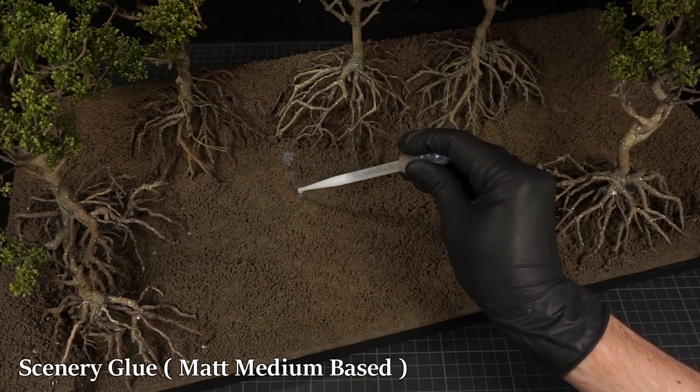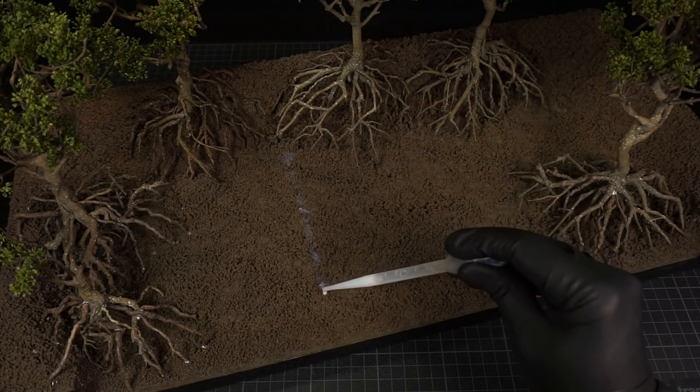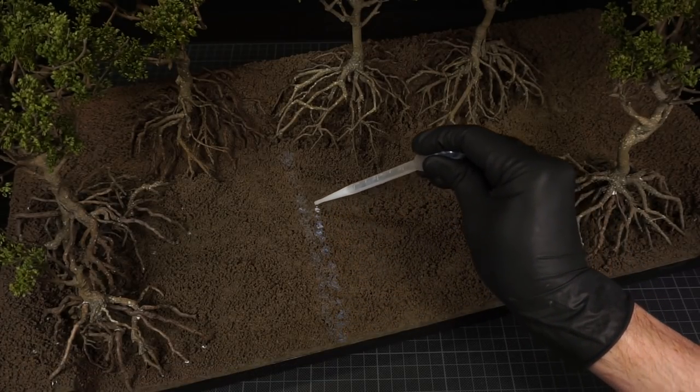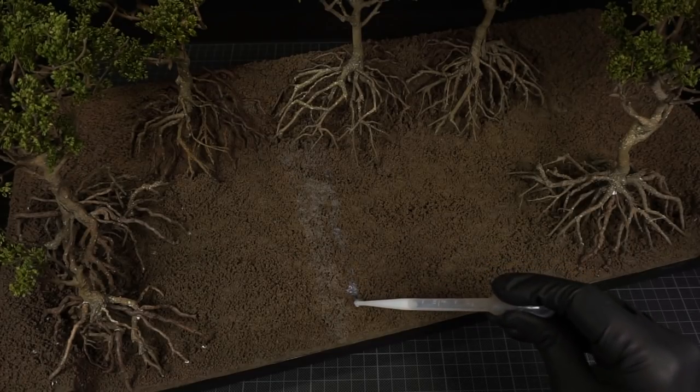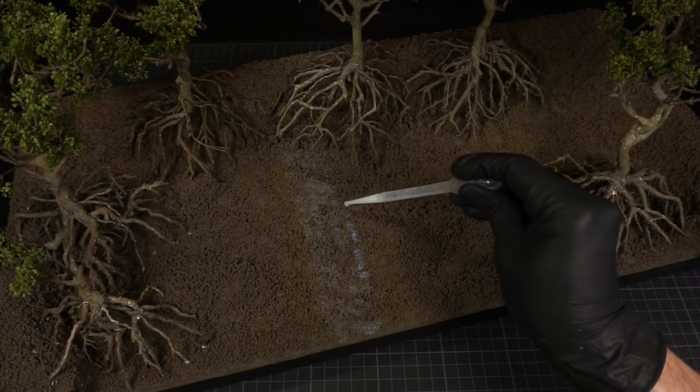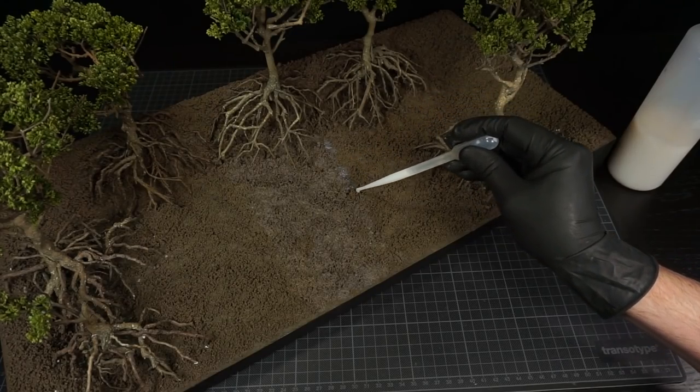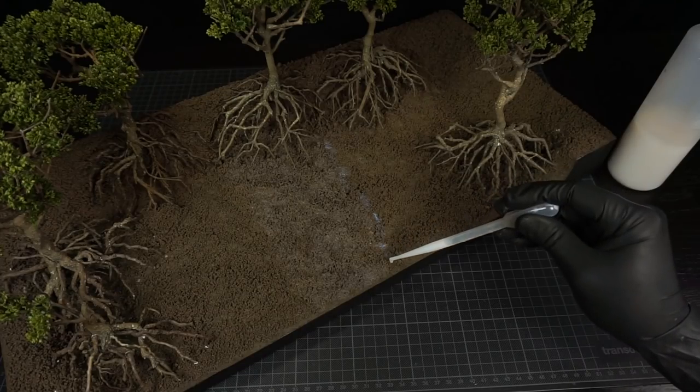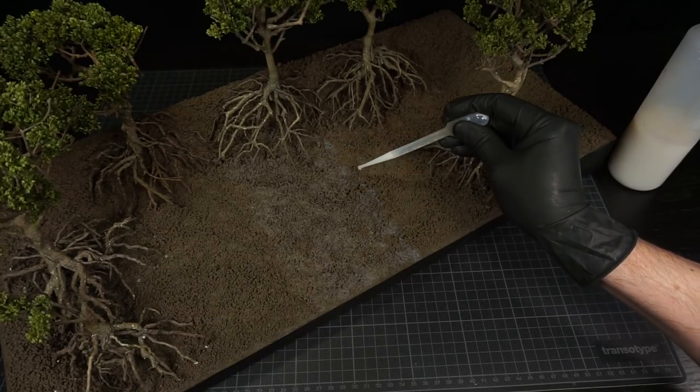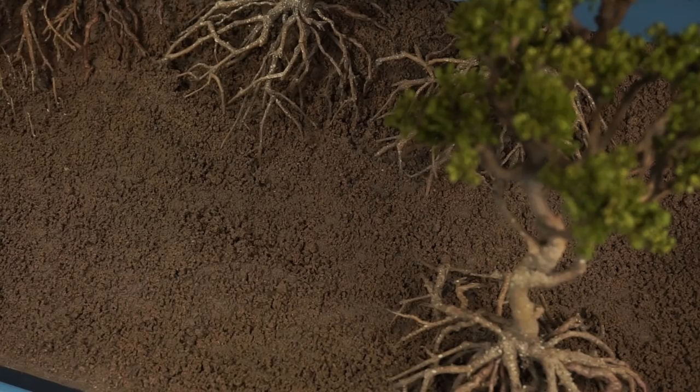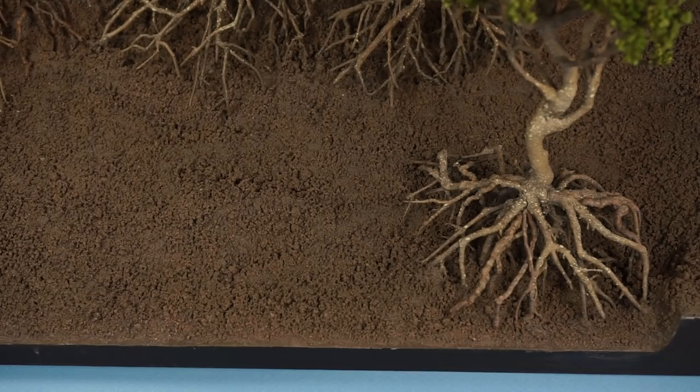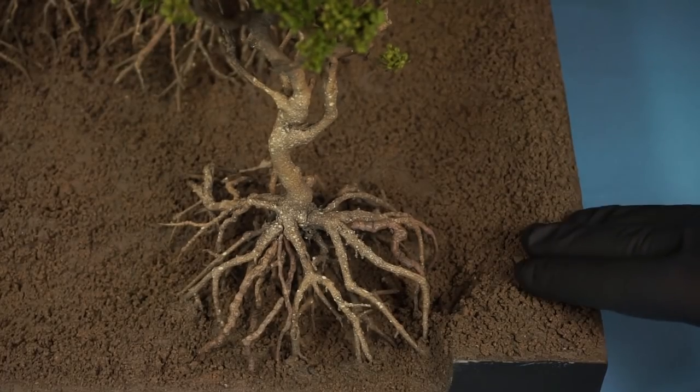To hold everything in place, I then add a generous amount of scenery glue over this. The cork material will soak up the glue nicely, so it will be quite strong while still retaining that loose texture.